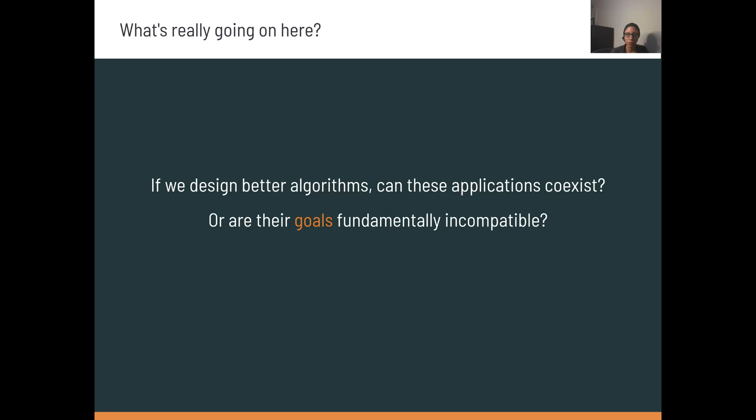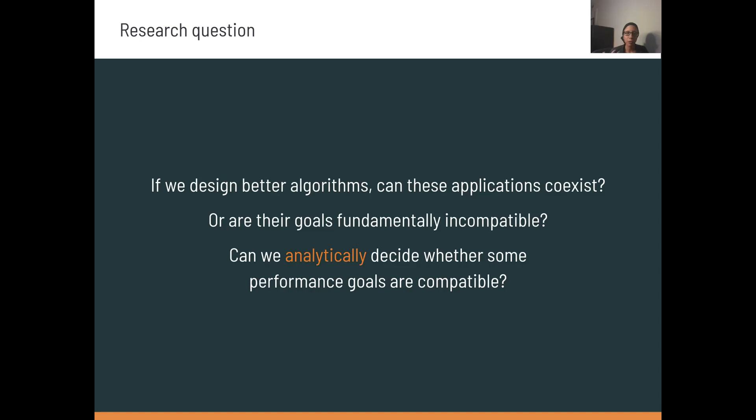So one question we could ask is, are these issues somehow fundamental, or are they just artifacts of protocols being suboptimal? If a protocol prioritizes latency, is it always doomed to get zero throughput when it competes with a protocol that prioritizes throughput? The goal of our work was to ask whether there are ways to analytically determine whether the performance goals of these protocols themselves are somehow incompatible, before we go about trying to design algorithms, hoping that we will find algorithms that play well together for these performance goals.